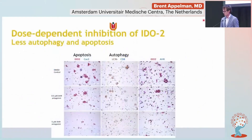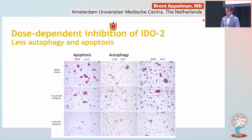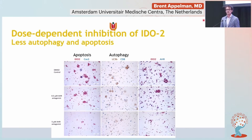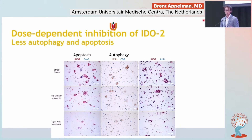We then stained for apoptosis and autophagy markers and tried to block IDO2 with an AHR antagonist. The controls showed clear IDO2 presence with a lot of apoptosis and autophagy. When we added the antagonist, IDO2 expression went down, apoptosis went down, and autophagy went down. Adding more antagonist pushed all of these down further — suggesting this process could be reversible. This is not yet in humans, so the next step is to see if we can diminish IDO2 and symptoms in actual Long COVID patients.